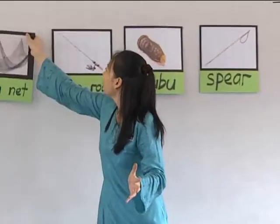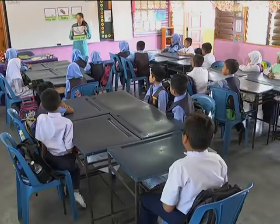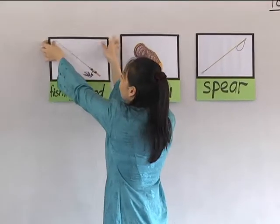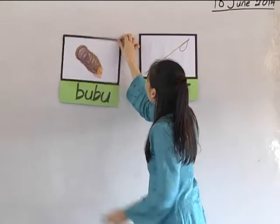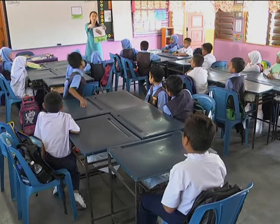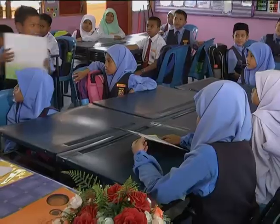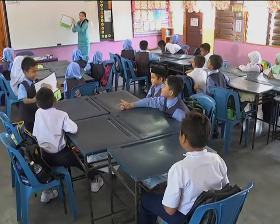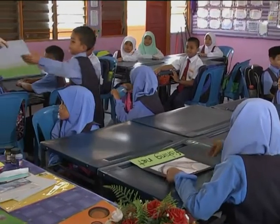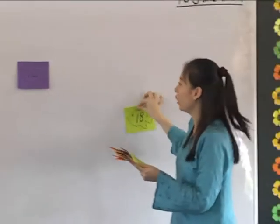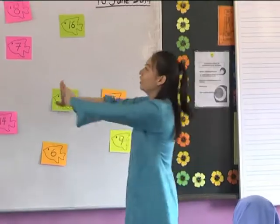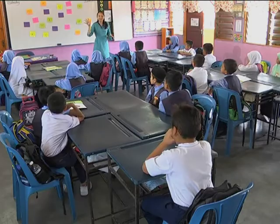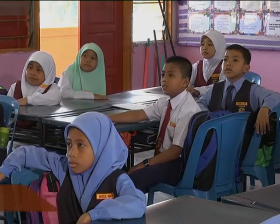I'm going to put you into groups. The first group is Group Fishing Net. This group is Group Fishing Net. And this group is Fishing Rod. The third group is Team Bu-bu. And the last group, you are Group Spear. Now, we're going to play a special game. Can you see all the fish here? I've got so many fish. This is your sea, and you are my fishermen. Are you ready? Fishing Rod, choose one number.